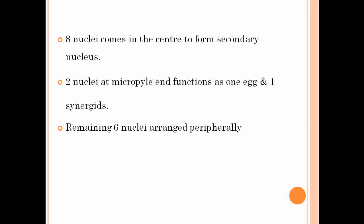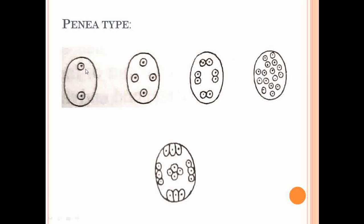In the Penea type, the binucleate stage undergoes nuclear division with nuclei arranged similarly to Peperomia. After further divisions forming the 8-nucleate and then 16-nucleate stage, the arrangement differs: 4 nuclei come to the center as the secondary nucleus, 3 nuclei migrate to the micropylar end as the egg apparatus, and the remaining 9 are arranged peripherally as antipodal cells. This is the Penea type of embryo sac.